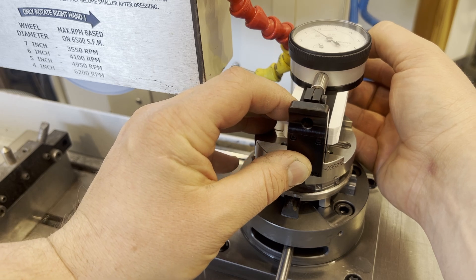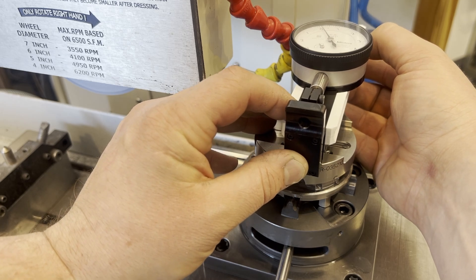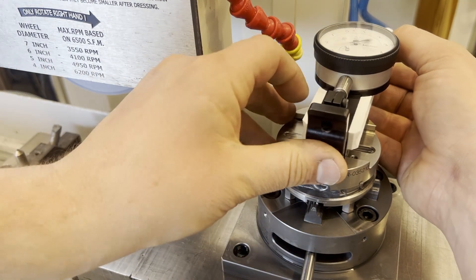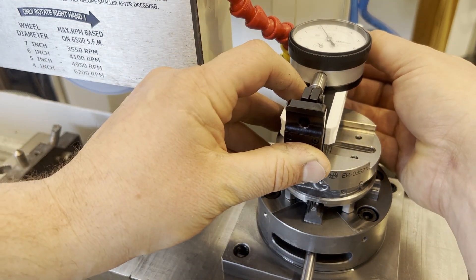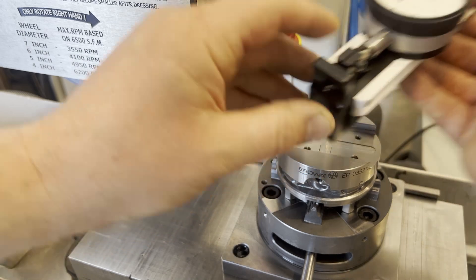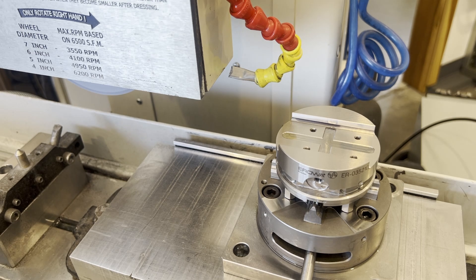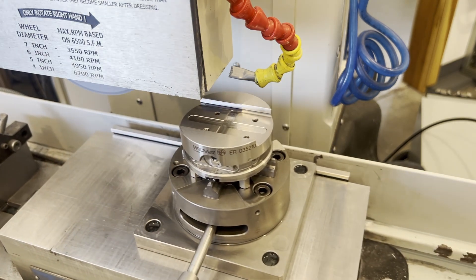Right now we're about a tenth under the width of the vice, and ideally I'd like to be about a tenth over. So we'll just take another 50 millionths, or another tenth per side, and that should put us a tenth over the vise width.